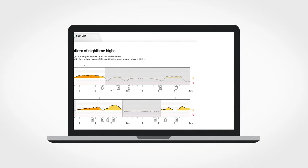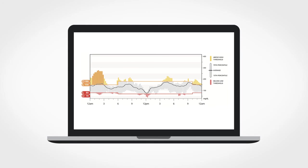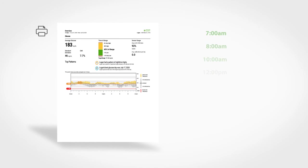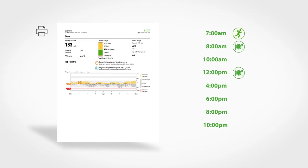To help explain your glucose data, print out your report and mark it with your usual times for walking, breakfast, lunch, dinner, sleeping, insulin, exercise, and snacks.